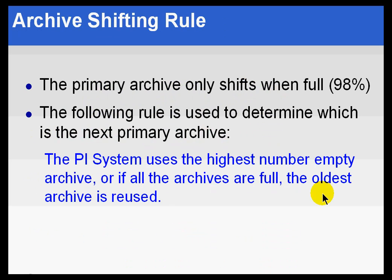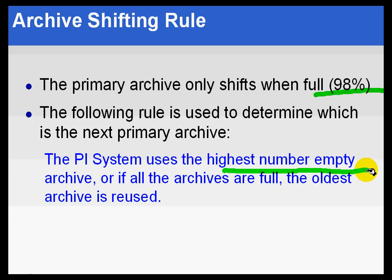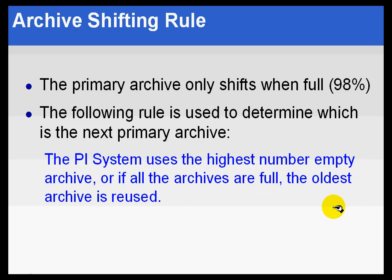Position 1 is always the second most recent archive. Position 0 is the primary — the one most recent next to the primary. Now, this only happens when the primary archive is just about full. The rule is we use the highest number empty archive if an empty archive exists, or if they're all full, the oldest archive is used.